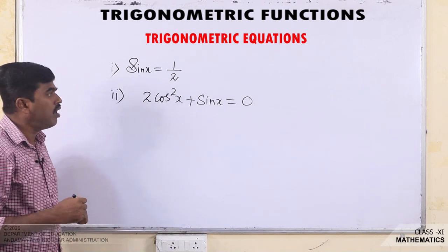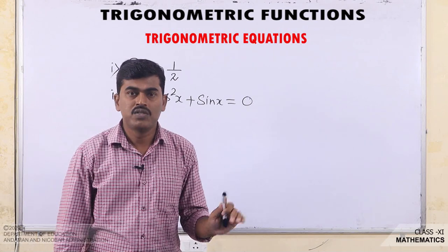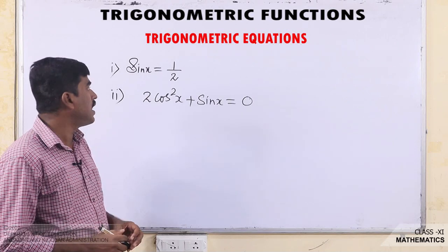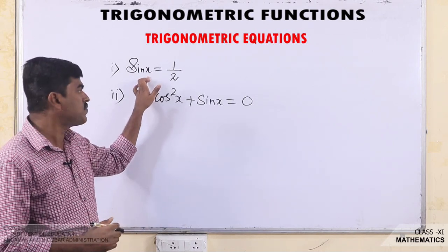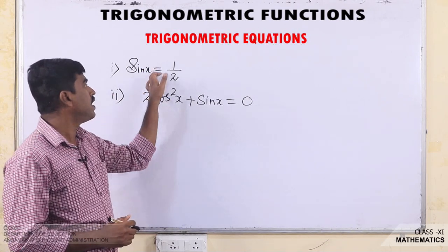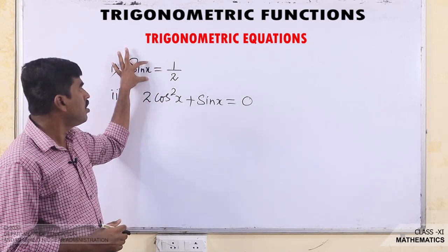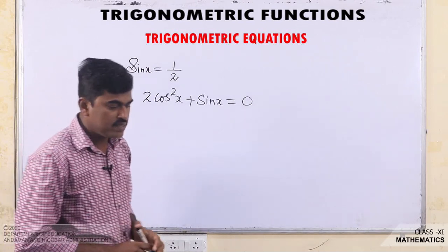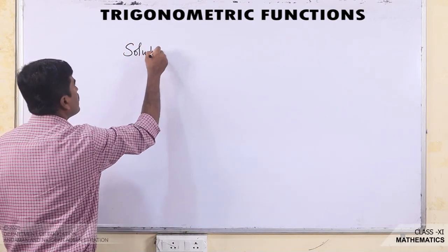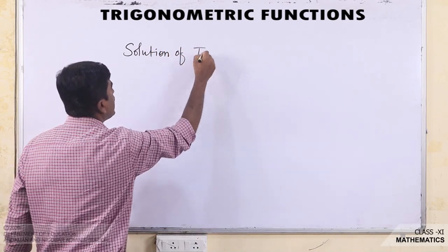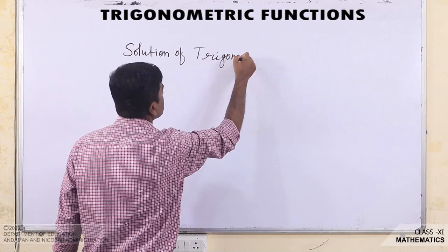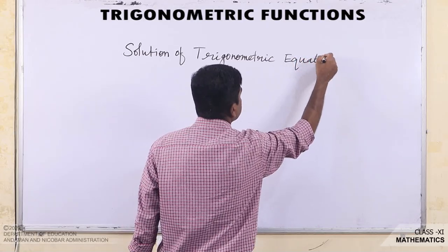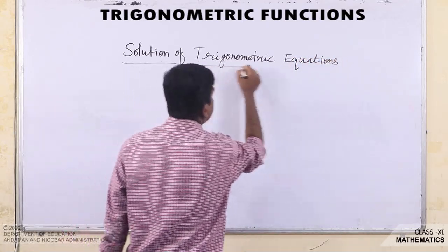Now let us discuss what is meant by the solution of a Trigonometric equation. The solution of a Trigonometric equation means the value of the variable which satisfies the equation. Here the variable is x, so the value of x which satisfies this equation is called the solution of this equation.